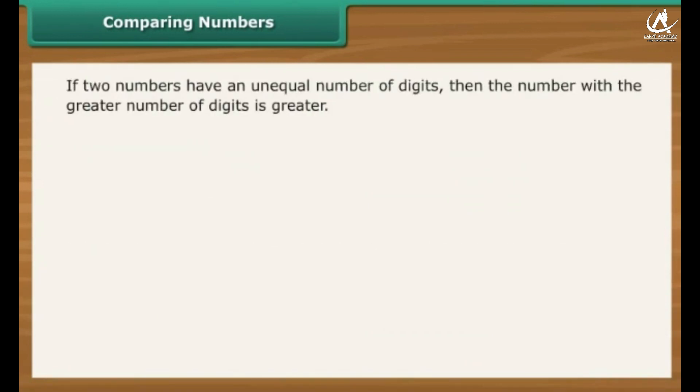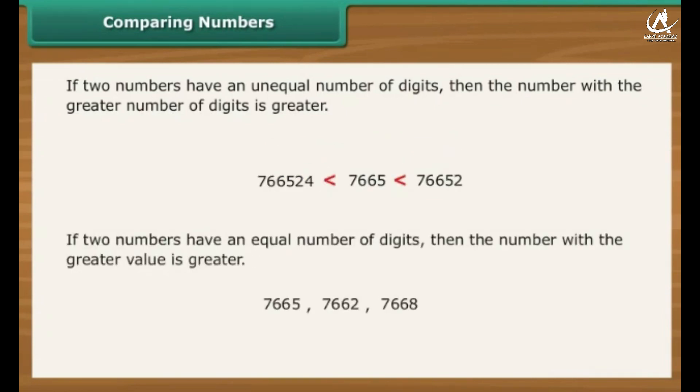If two numbers have an unequal number of digits, then the number with a greater number of digits is greater. If two numbers have an equal number of digits, then we need to compare numbers at each position. The largest four-digit number is 9,999.